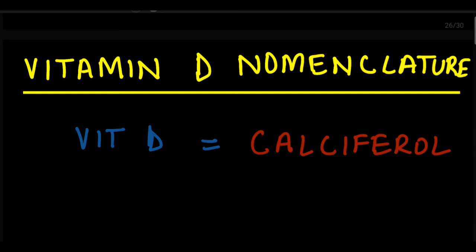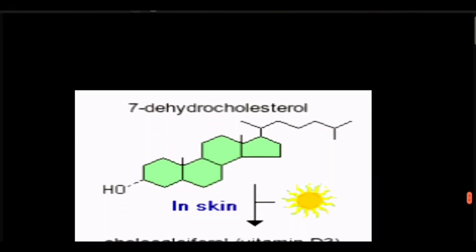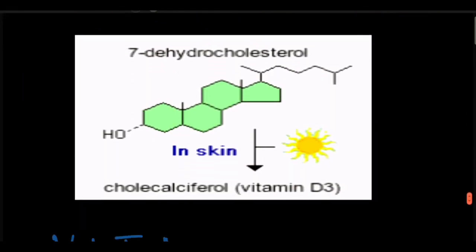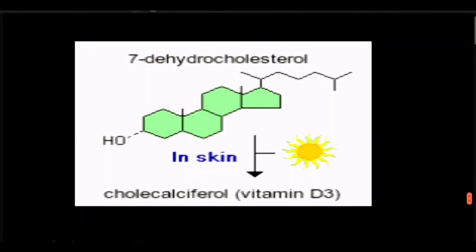The basic name used for Vitamin D is calciferol — remember that. Going back to how it is formed: it is formed in the skin through the conversion of 7-dehydrocholesterol into cholecalciferol, or Vitamin D3. The UVB part of sunlight is used in this conversion, and 7-dehydrocholesterol is already present in the skin.